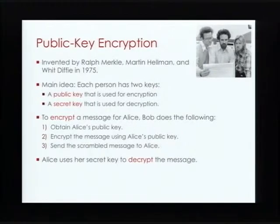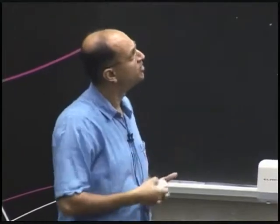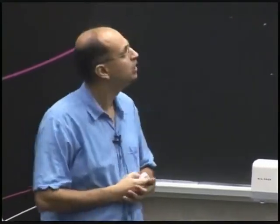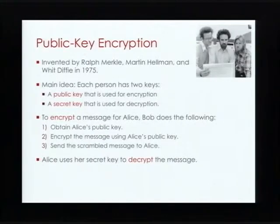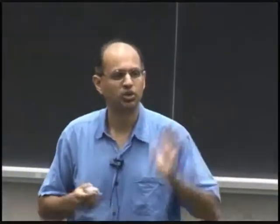Conceptually, the idea is each person — Jeff, for example — has two keys: a public key that's used for encryption or locking, and a secret key that is used for decryption or unlocking. So Alice has her own key pair, Jeff has his own key pair, I have my own key pair. If Bob wants to send Alice a message with confidentiality, what Bob needs to do is obtain Alice's public key — maybe over the internet; it's not a secret, so it can be sent over the internet — encrypt the message by scrambling it using Alice's public key, send the scrambled message to Alice, and Alice can use her secret key, which only she knows, to unscramble the message.